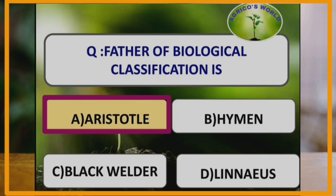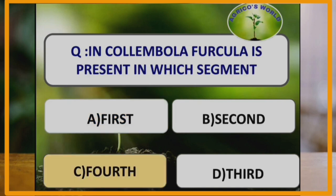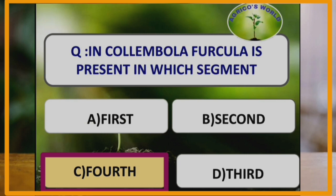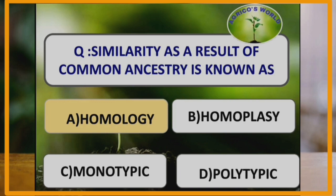In Collembola, farcula is present in the fourth abdominal segment. Farcula is also called the springing organ. The first abdominal segment contains a bilobed adhesive organ called colophore or glupeg, which helps in water absorption. The third abdominal segment consists of hamula, or tenaculum, or retinaculum, to hold the farcula. The fifth and sixth segments consist of gonopore and anus respectively.